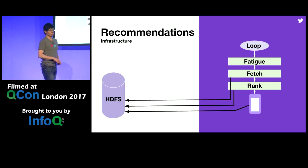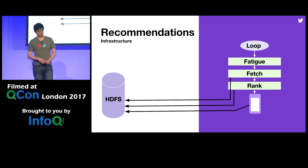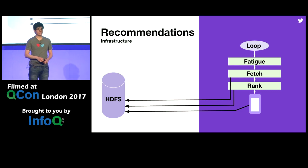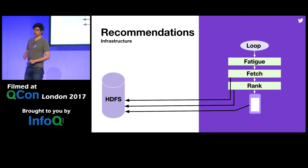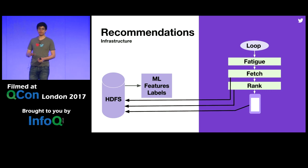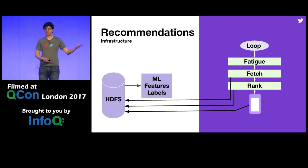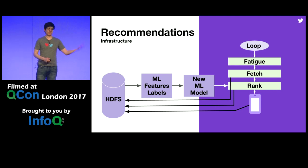Twitter is a data and experimentation driven company, so data is what drives our machine learning models. At each service, we log information back to HDFS — for example, the ML model scores given to all candidates in the rank stage. We also instrument all clients: when you open a notification or signal you don't like it, we capture that on HDFS. These become machine learning features and labels that feed not only into notifications but potentially into your ranked home timeline. We generate updated ML models from this collected data, so as Twitter constantly changes, our models adapt. In this way, we deliver you relevant recommendations.